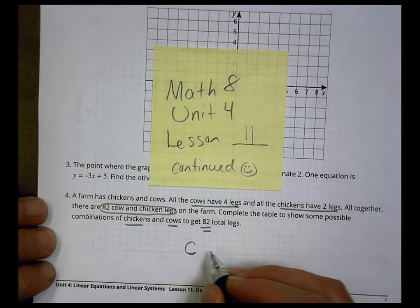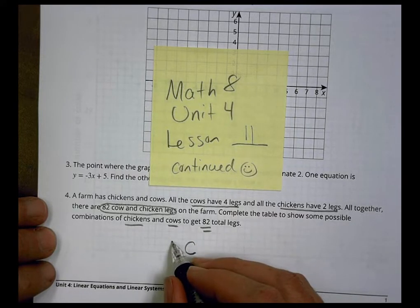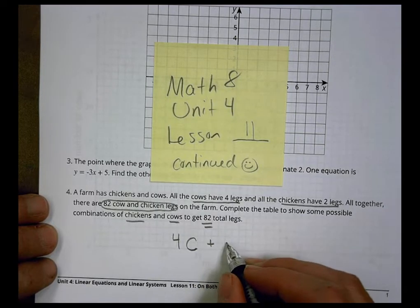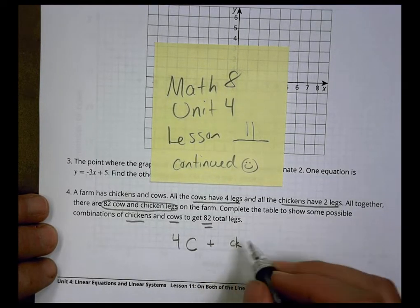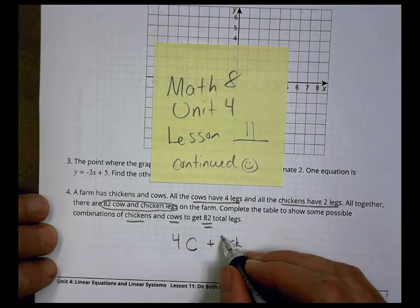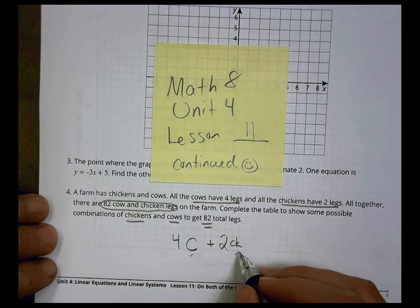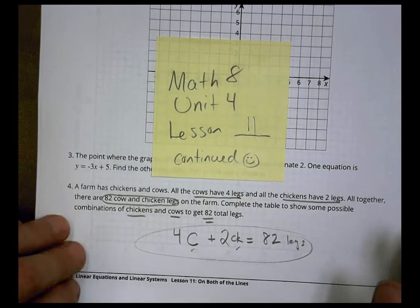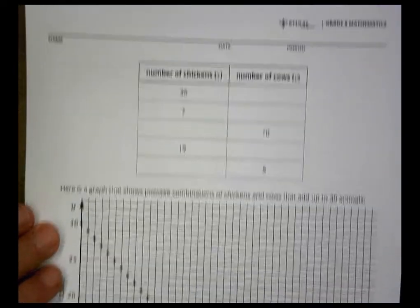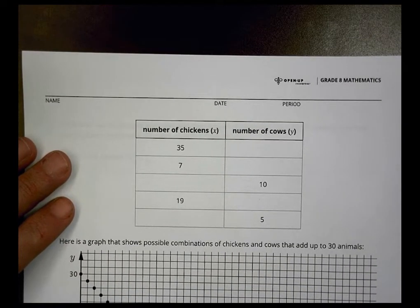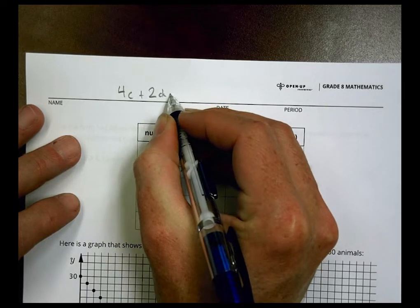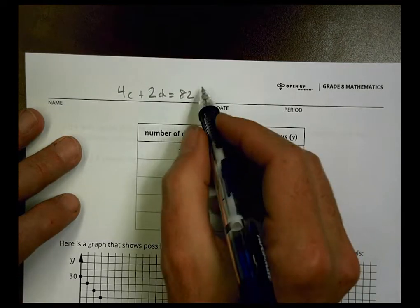Cows have four legs, so however many cows I have, I multiply the number of cows by four to get cow legs. I add that to the chickens — I'll call them 'ck' — who have two legs. So whatever combination of cows and chickens I have, multiplied by their leg count, gives me 82 total legs. The basic equation is: 4×cows + 2×chickens = 82.